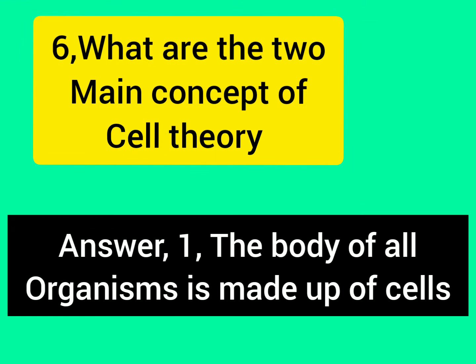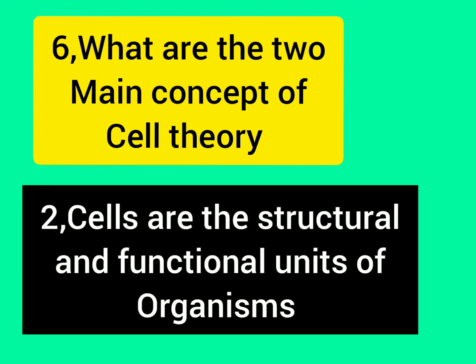What are the two main concepts of cell theory? Answer: First point: The body of all organisms is made up of cells. Second point: Cells are the structural and functional units of organisms.